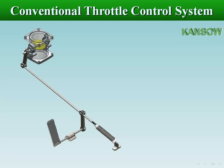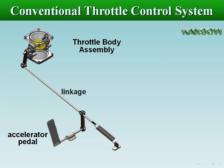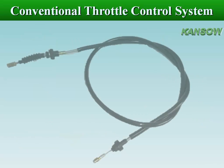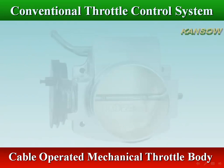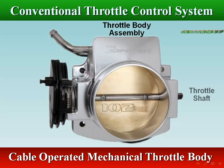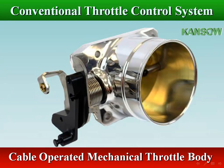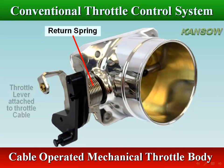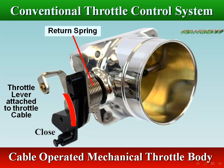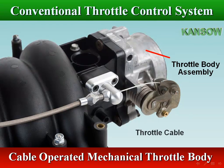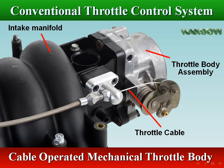The throttle body is directly connected to the accelerator pedal with a linkage or flexible cable, which moves the throttle shaft when the accelerator pedal is depressed. The accelerator pedal is used to control the angle of the butterfly valve, which regulates the amount of air entering the engine.